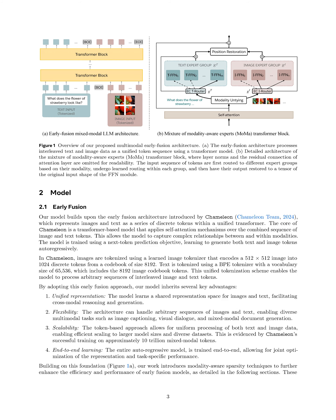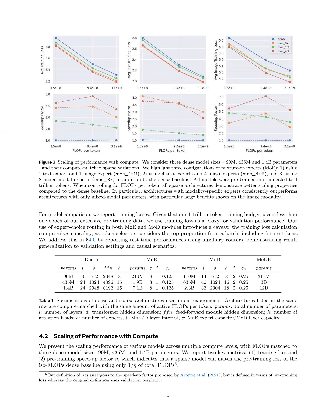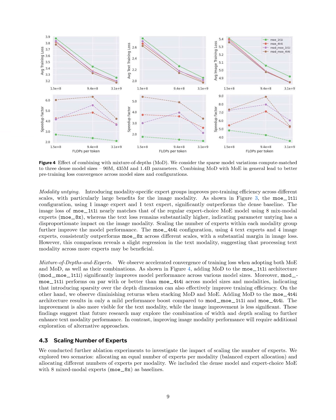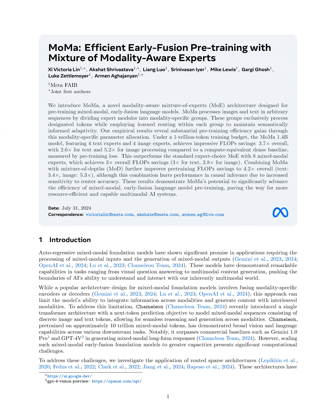This is evidenced by experiments where the Chameleon-MoMA model achieved a substantial 3.7 times overall flop savings compared to a dense baseline, while maintaining a modest minus 17% throughput reduction. Additionally, the introduction of modality-specific expert groups significantly improved pre-training efficiency, particularly for the image modality, as shown by the MO-1T1I configuration outperforming the dense baseline on most metrics. Furthermore, the combination of width and depth scaling through MoMA and MoD led to accelerated convergence of training loss, indicating enhanced performance across various model sizes. These improvements highlight the effectiveness of MOS in optimizing both computational resources and model performance in mixed modal tasks.